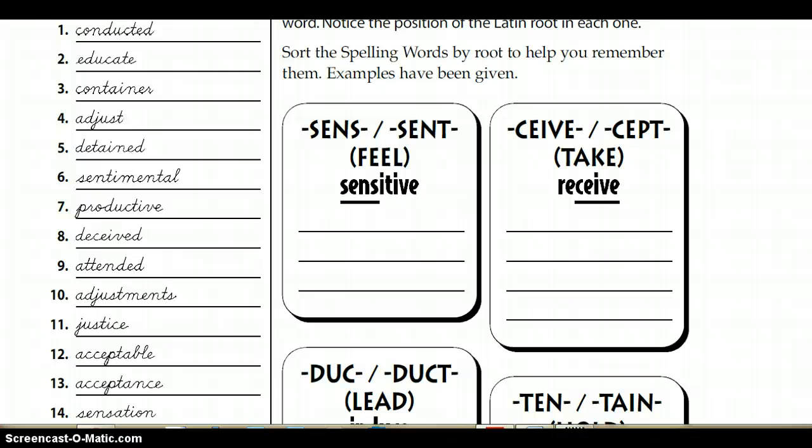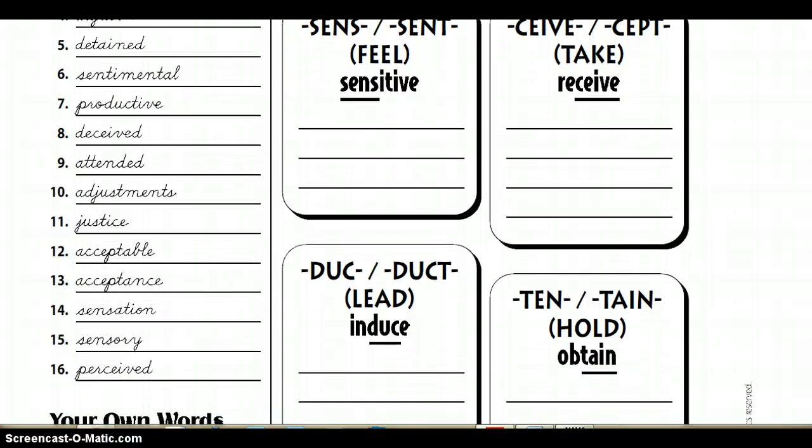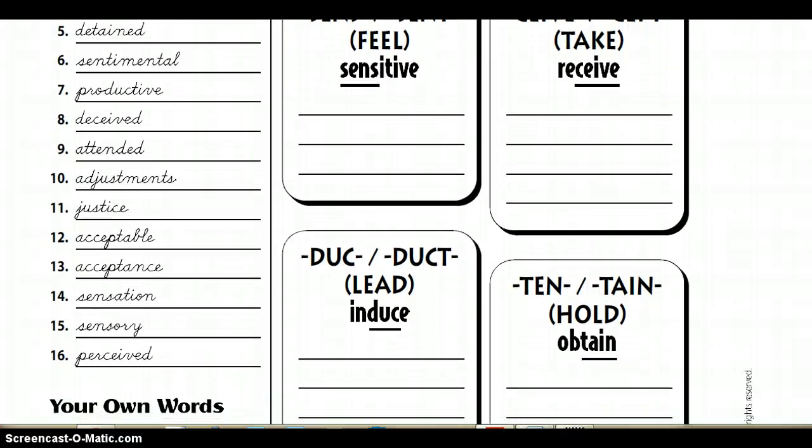Let's go with sentimental, number six. The locket I lost had great sentimental value — which means it was very special. Another one, number eight: deceived. When Jim found out that he had been deceived, he was quite angry — you know, tricked.